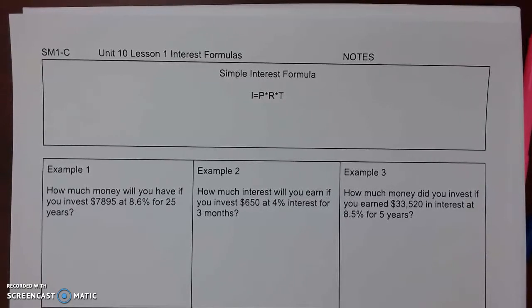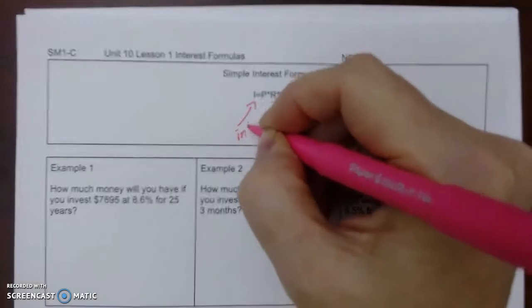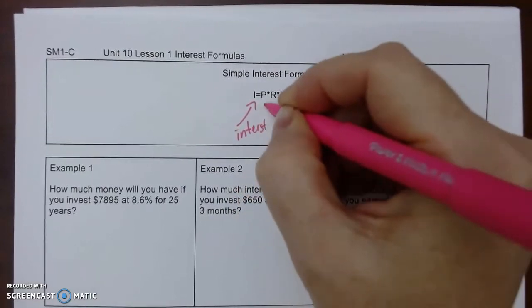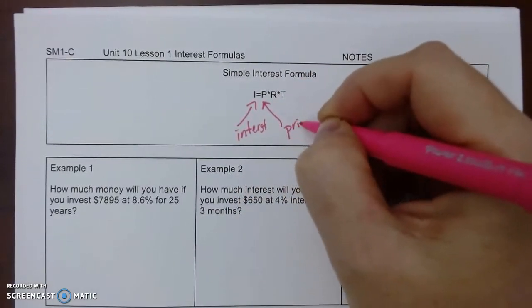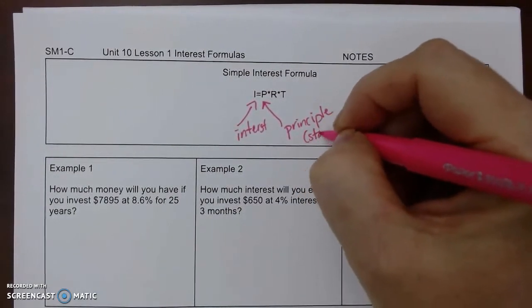Alright, unit 10 lesson 1 is all about interest formulas. So the simple interest formula is I, which is just the interest earned, is equal to P, which is our principal, which is what you start with.